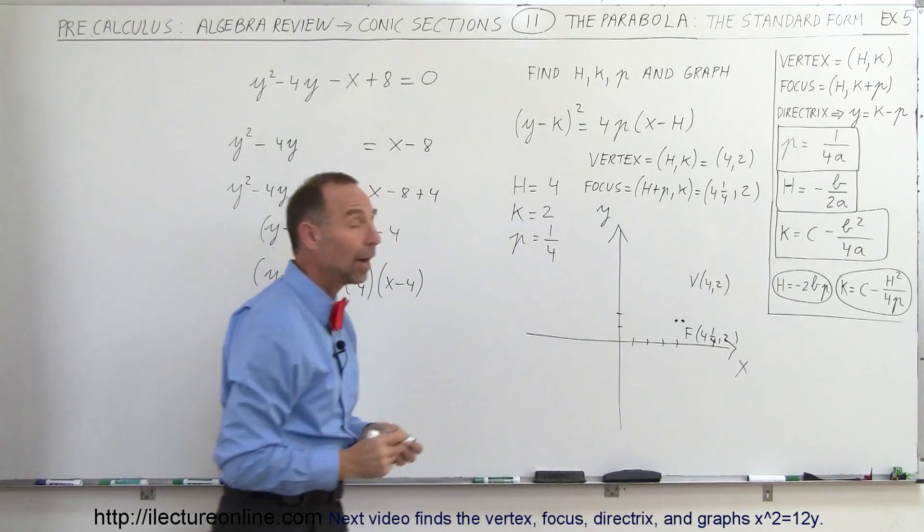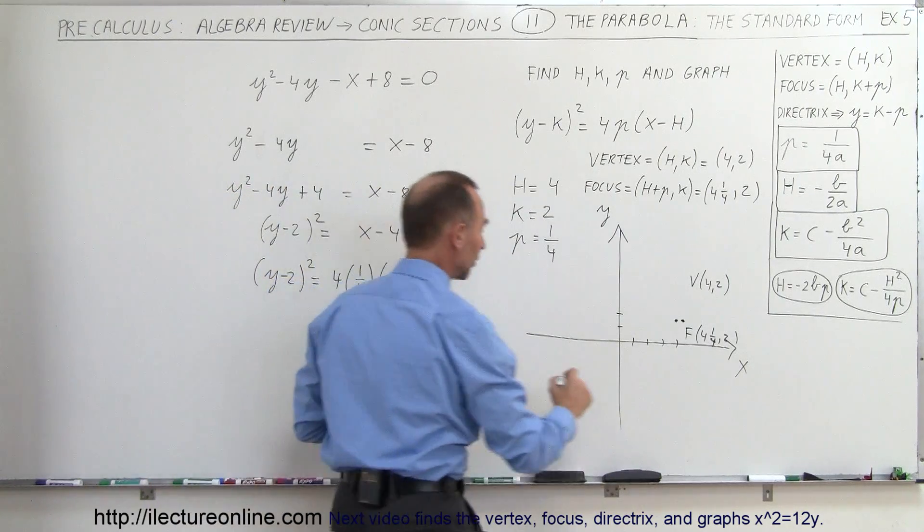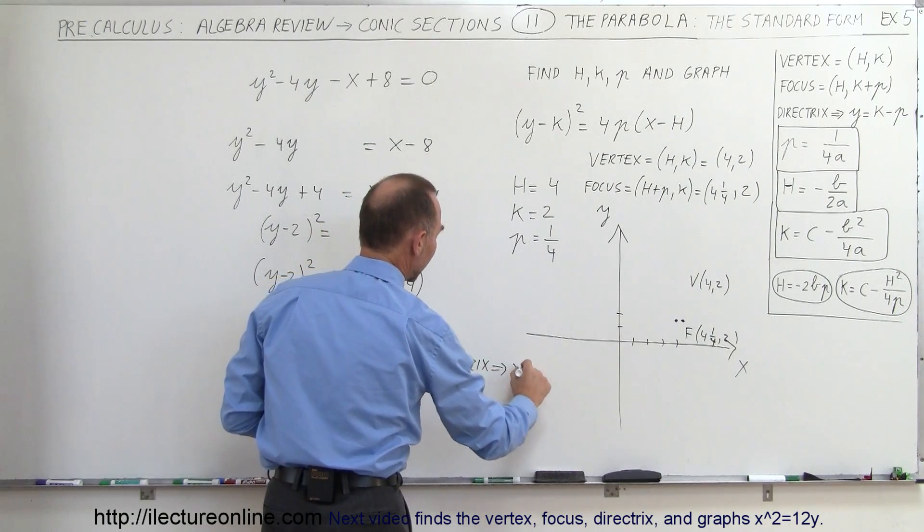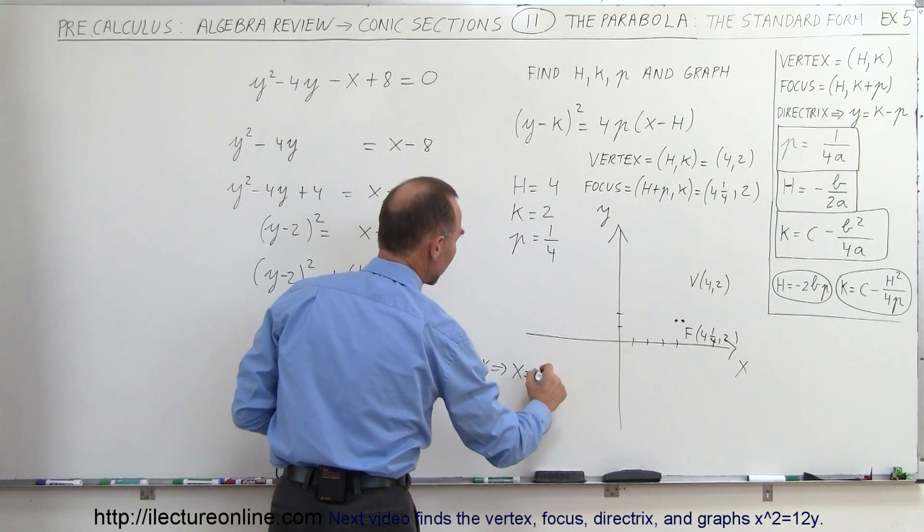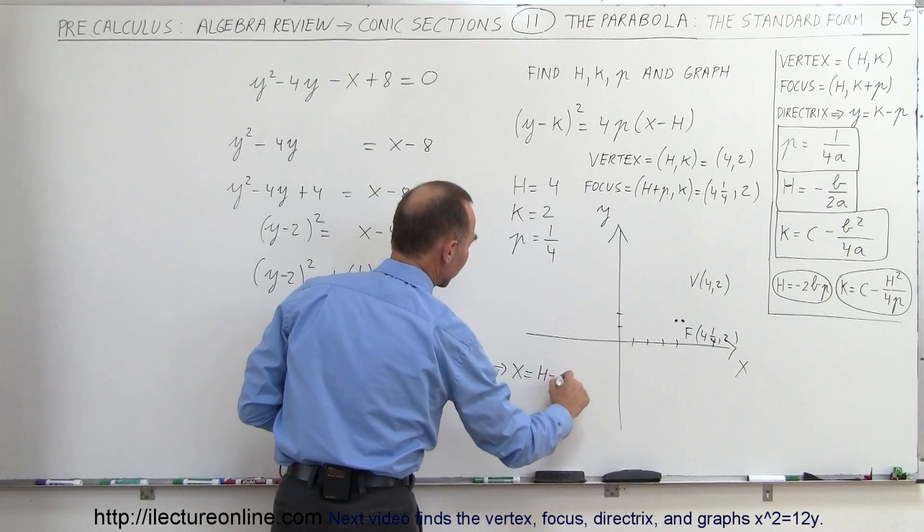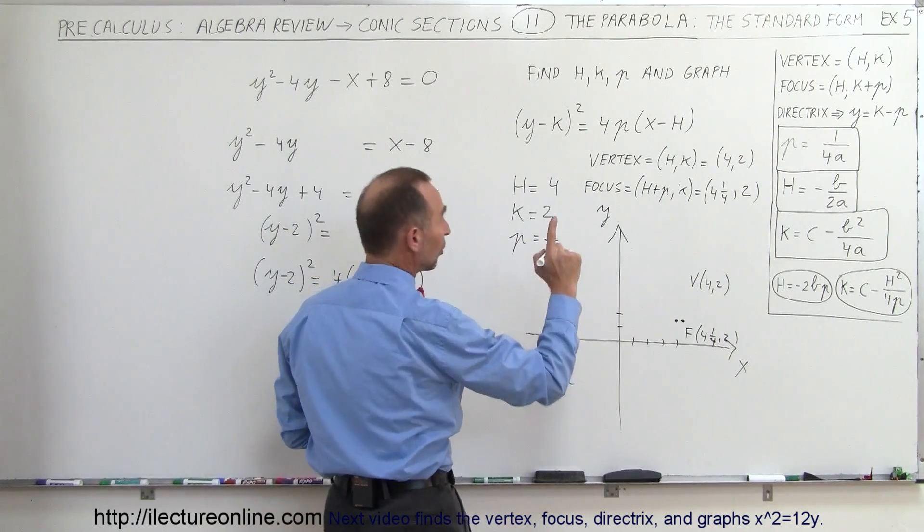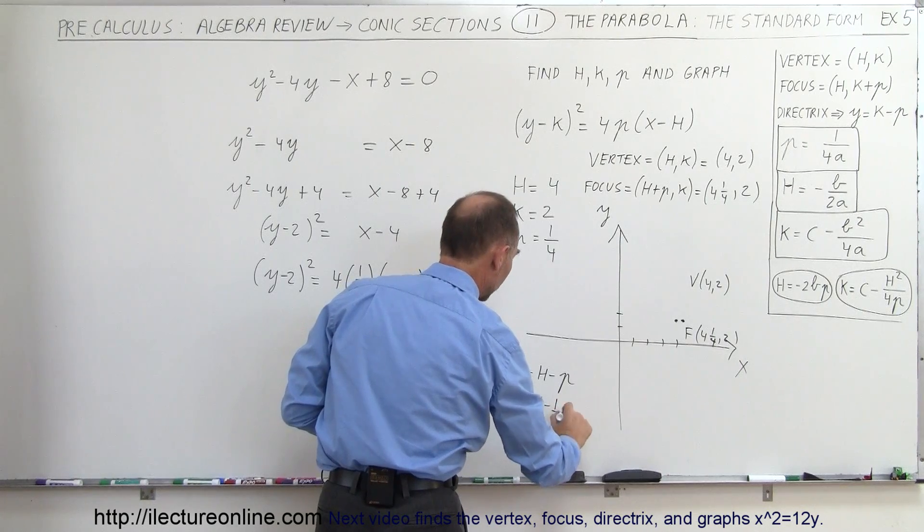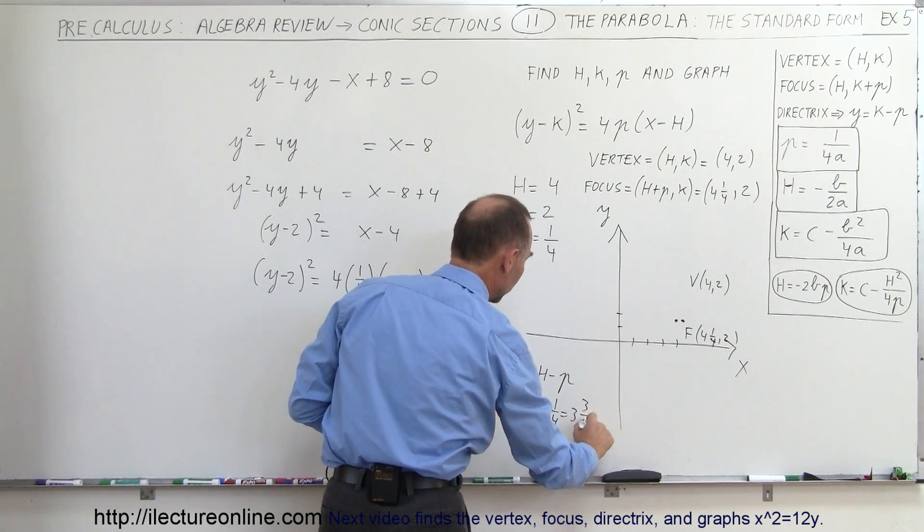And now we want to find the directrix. To find the directrix, let me just put right over here, can be found by taking x equals... that would be x equal to h - p. In this case h was equal to 4 minus a quarter, which is equal to 3 and 3 quarters.